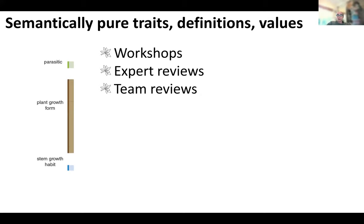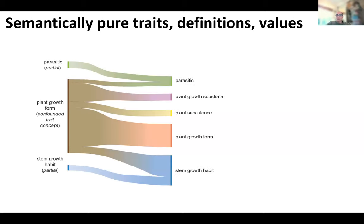As an example, when we started we had traits for parasitism status, plant growth form — with about 50 terms submitted — and stem growth habit. We weren't happy with how terms were mapped, so through discussion we cleaned them up. We went from that muddied plant growth form to five semantically clear definitions. Plant growth form had included where the plant grows — aquatic or epiphyte — which is now its own trait: growth substrate. We now have much tidier, cleaner, shorter lists of allowable plant growth forms.